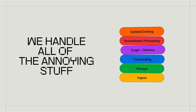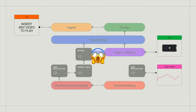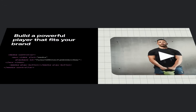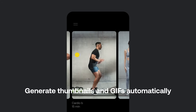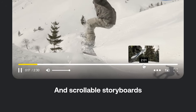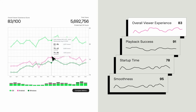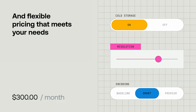Well, because we take care of all the annoying stuff it takes to build video from scratch, ensuring the best video performance while still providing the flexibility developers need. So you can do things like create a custom player that fits your brand, build in automatic thumbnails and GIFs as well as scrollable storyboards and AI-powered captions, and finally get all the performance data you could ever want. We also provide flexible pricing to meet your needs.